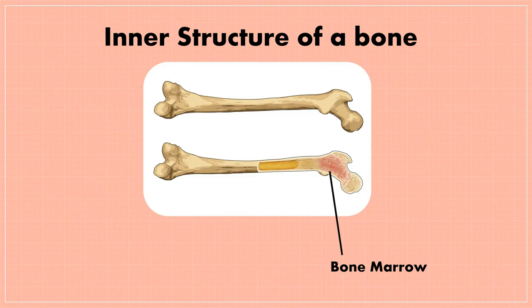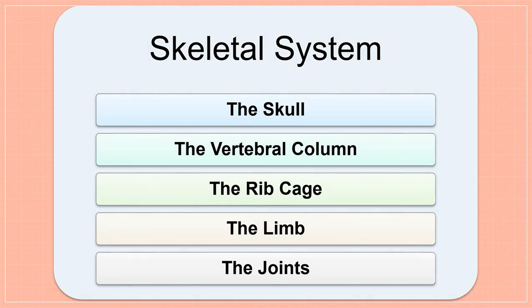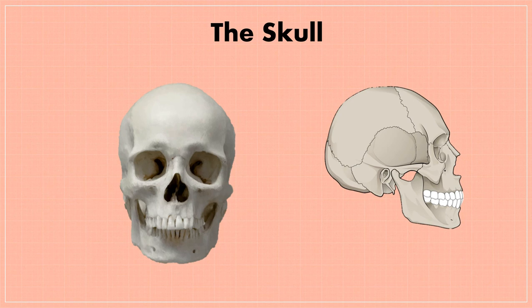The different parts of the skeletal system are the skull, the vertebral column, the rib cage, the limbs, and the joints. The bones in our head make up the skull, and the skull is made up of 22 different bones fused together. The skull protects the brain and contains holes for the eyes, nose, ears, and backbone.